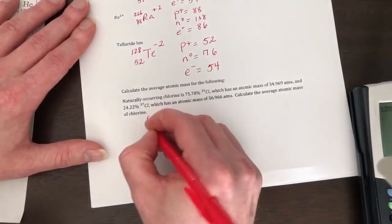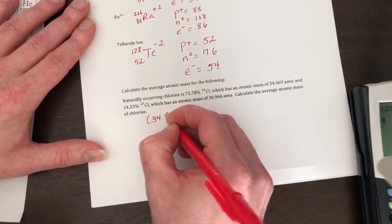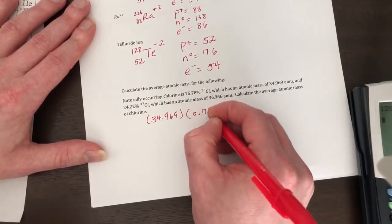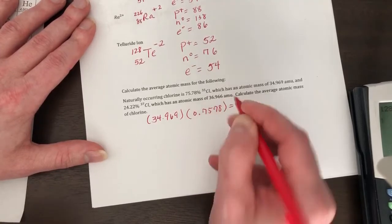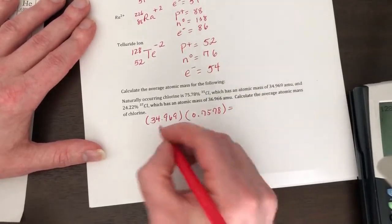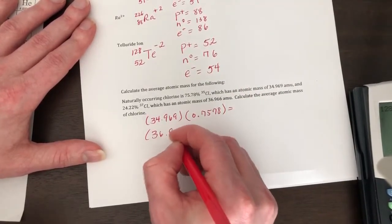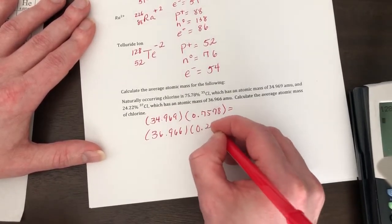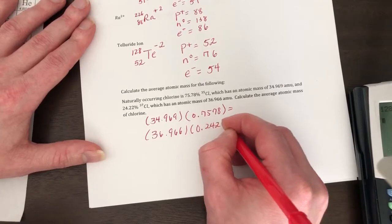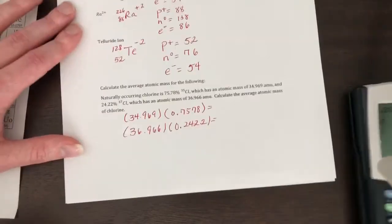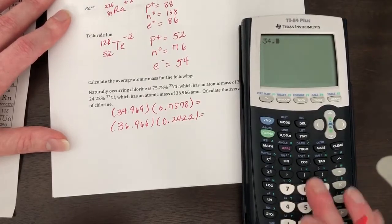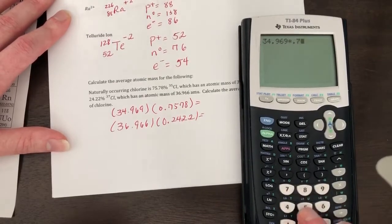So what we did is we took the mass, we multiplied by the percentage. And then we took the mass and we multiplied by the percentage. Make sure we move our percentage two decimal places to the left. So we multiplied the numbers 34.969 times 0.7578.